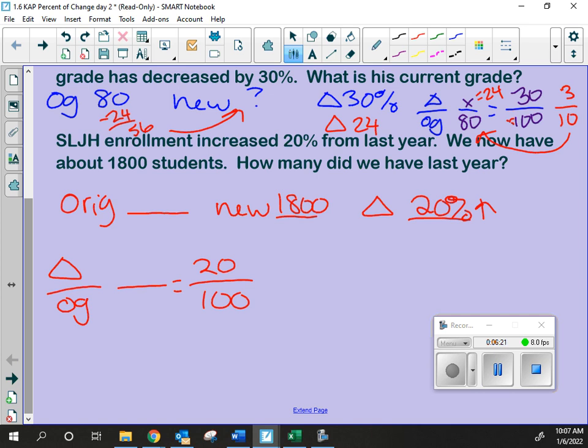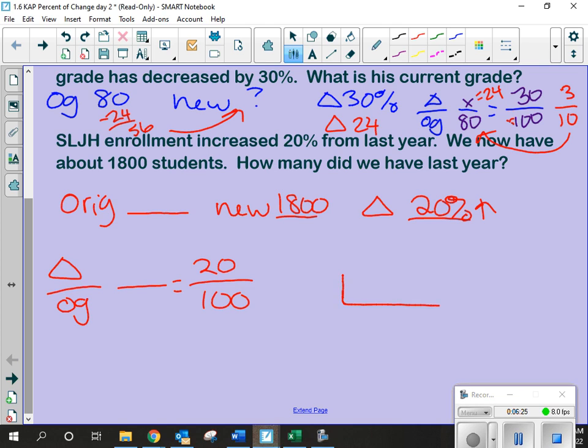I know the 20%, so that goes over 100. But do I know my change in students, like the actual number of students changed? Or the OG? No. Okay? So we sort of have to problem solve. Okay? I'm going to draw the bar model because I actually like it on this problem quite a bit because it helps me visually see some stuff.